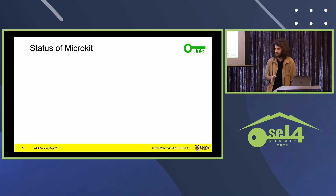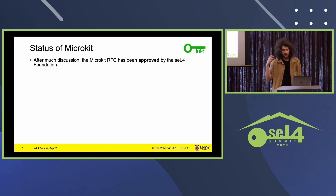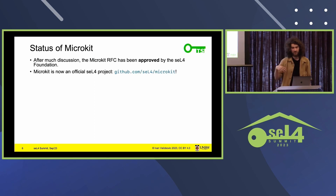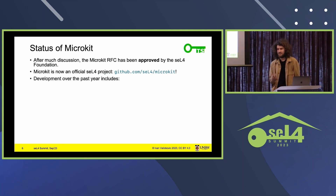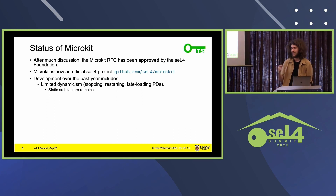That concludes introducing Microkit. Now I'll talk about the status, because a lot has happened over the past year. First, just last week, the Microkit RFC was approved by the seL4 Foundation, and so now it is an official seL4 project — it's been moved over to the seL4 repositories, which is great. In terms of actual development, that includes things like limited dynamicism — stopping, restarting, and late-loading PDs. We still have a static architecture, so you'd know how many PDs are in the system before running it, but you may have a pool of PDs that you dispatch work to.